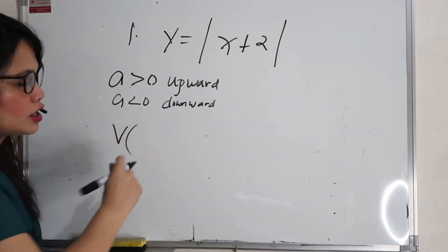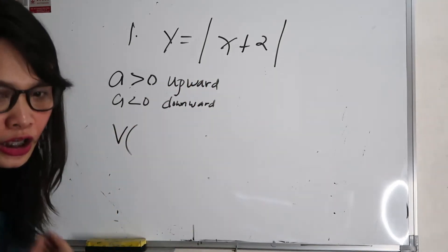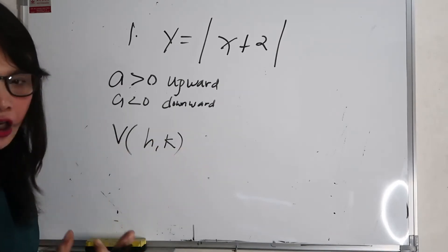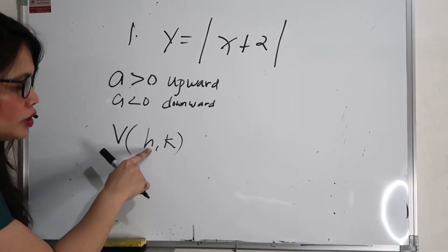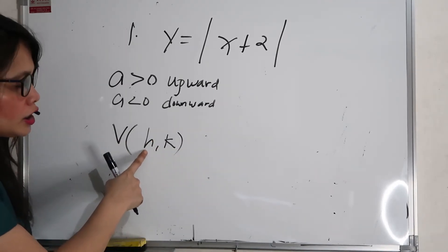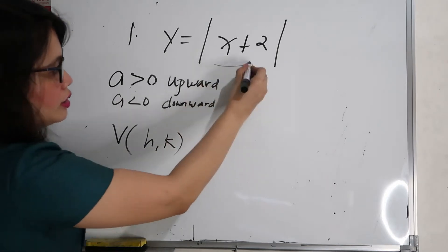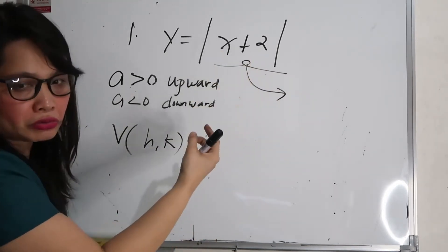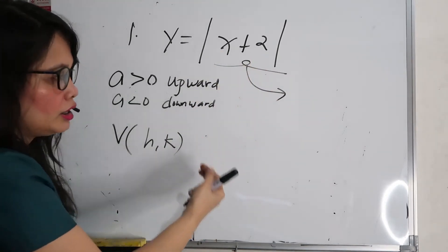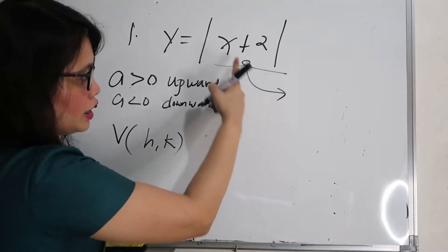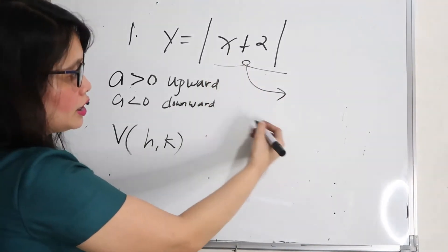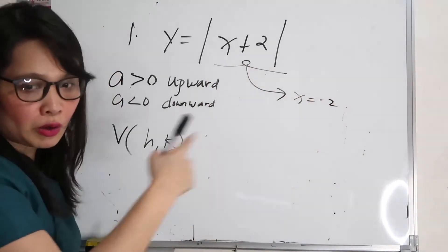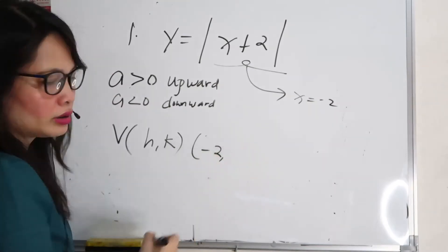Next, what about the vertex? The vertex is at (h, k). To determine h, we look at the value of x inside the absolute value expression. For x plus 2, we set x plus 2 equal to zero, giving us x equals negative 2. So h equals negative 2.